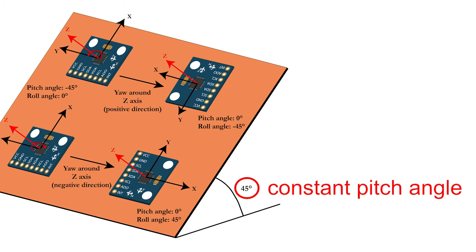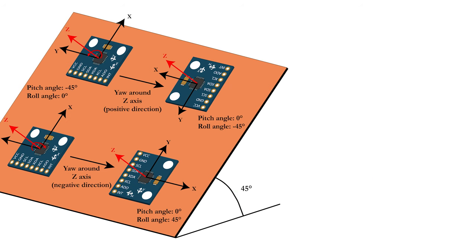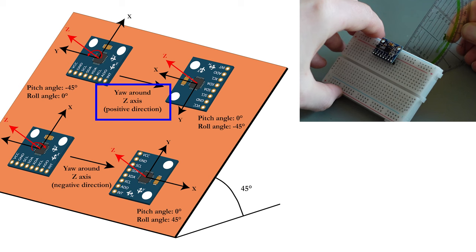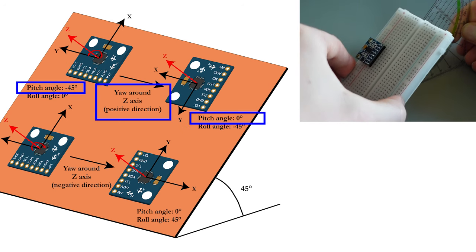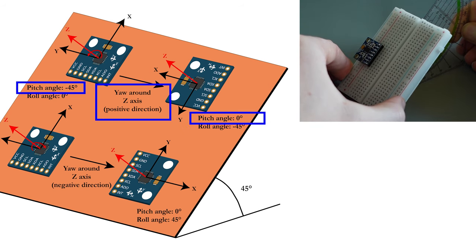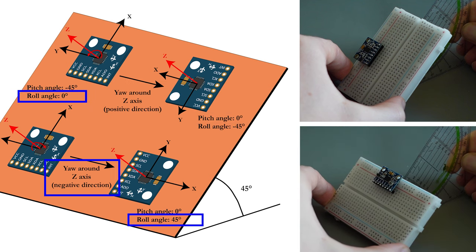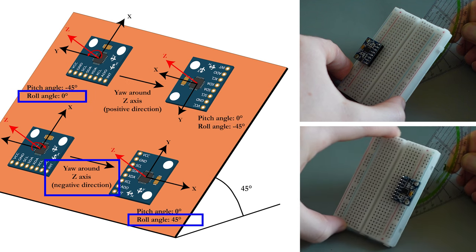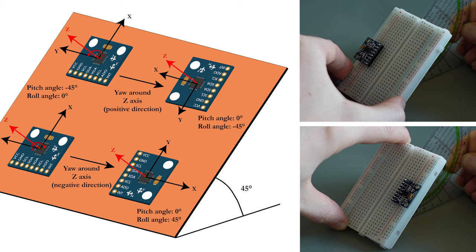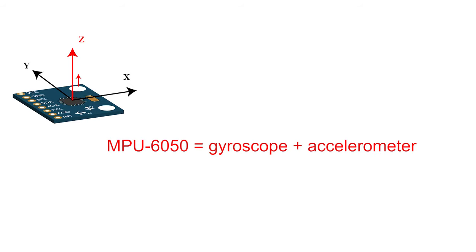Suppose the quadcopter is flying with a constant pitch angle of 45 degrees. When you yaw around the z-axis without any pitch rotation rate around the y-axis, the pitch angle will nonetheless decrease or increase because the y-axis changes its direction as well. This is equally true for the roll rotation rate. That is why you need to use a totally different approach for measuring angles, for which you will use the accelerometer built into your MPU6050.